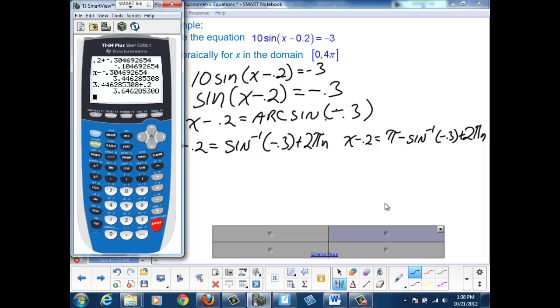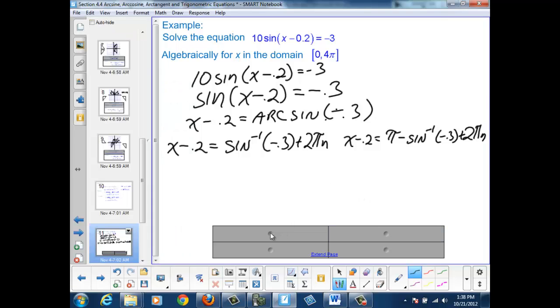Given those two initial values, we can write out the general solutions for our original equation. We see that x = -0.105 + 2πn, or x = 3.646 + 2πn.